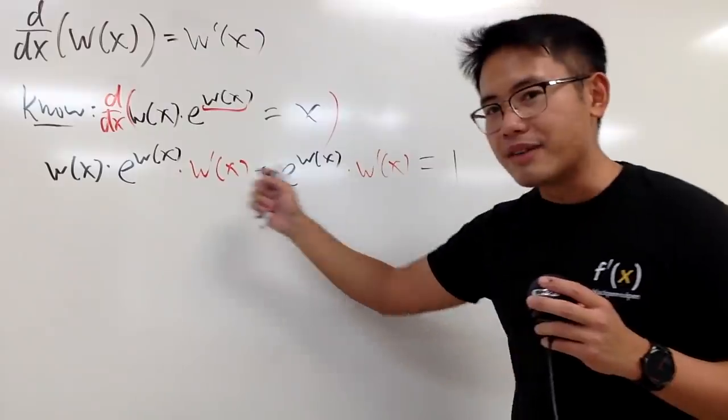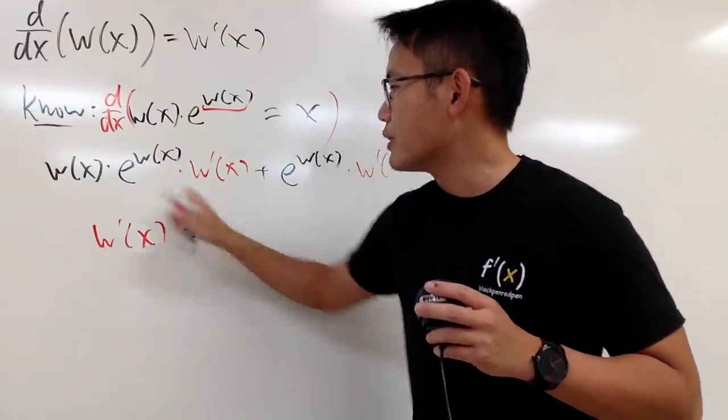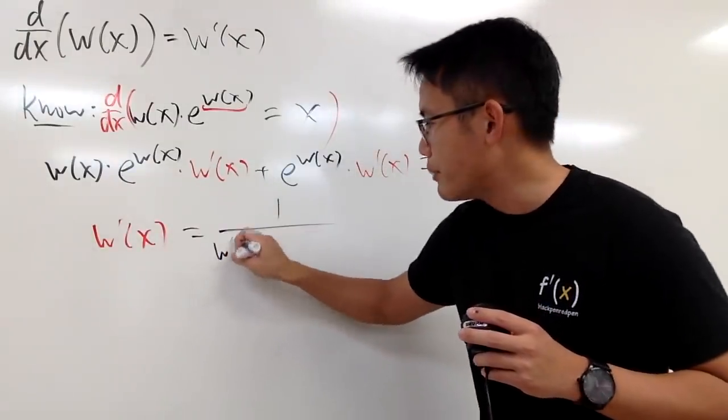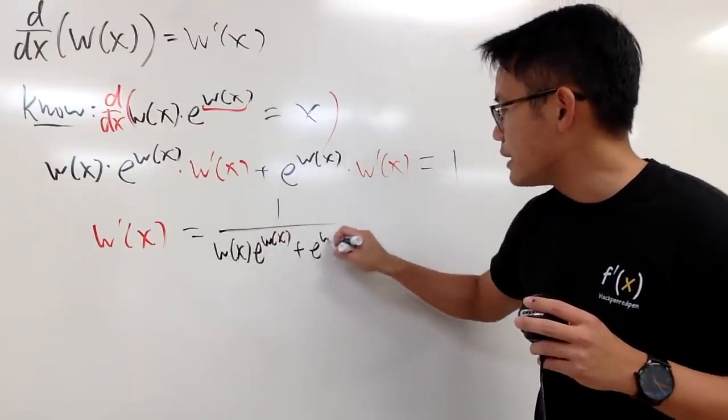And now you see, both terms right here have the W prime of x. So of course, we can factor that out. And then, in the meantime, I'm also dividing this and that to the other side. So this is equal to 1 over this right here, which is W of x times e to the W of x, and then we add this with e to the W of x.